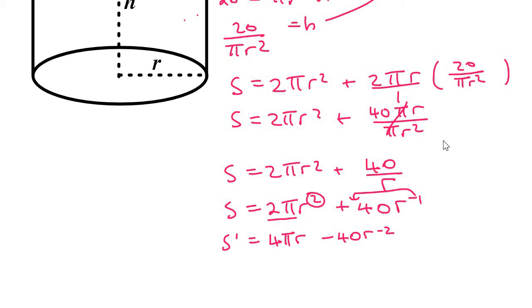Now for minimums and maximums, you make the first derivative equal to 0. And so we can say 0 is equal to 4 pi R. I'll take the R minus 2 to the bottom again, like that.